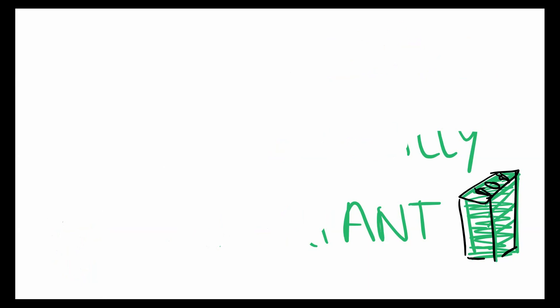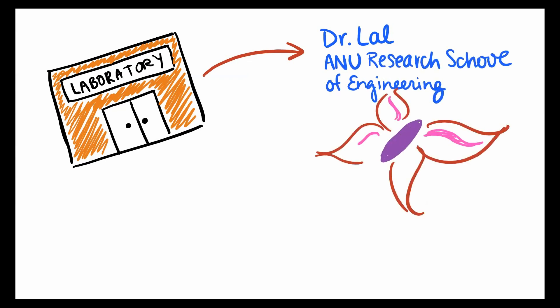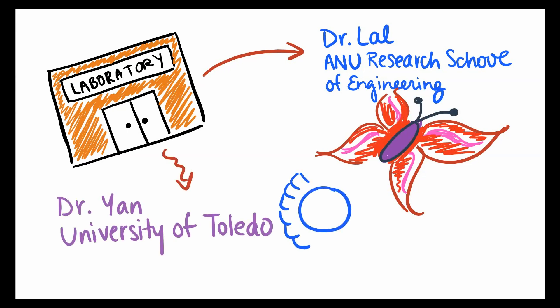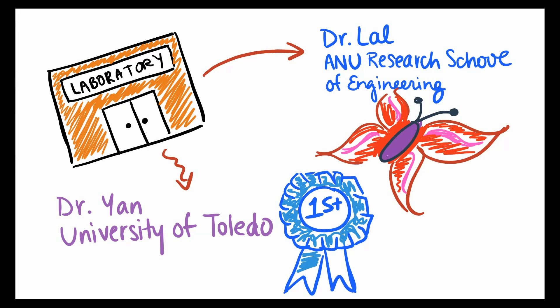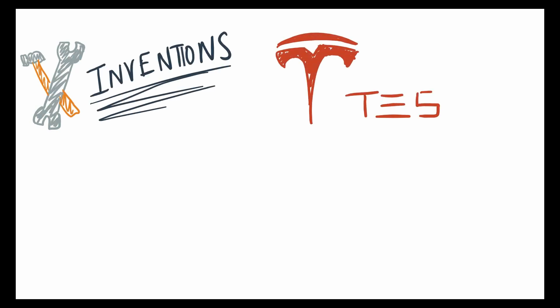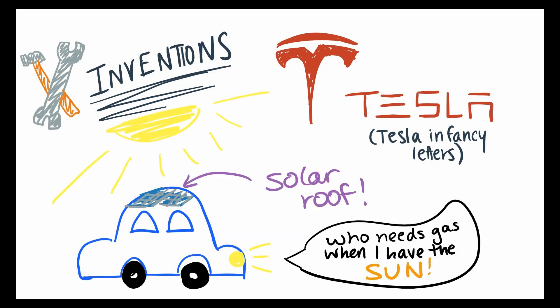As Dr. Davies mentioned, there is so much research being done to improve solar panels' efficiencies and costs. One example is Dr. Lal at the ANU Research School of Engineering — his group is using designs and structures inspired by butterfly wings to make solar panels more efficient. In addition, recently the world record for solar cell efficiency was actually broken by a team at the University of Toledo, led by Dr. Yan. Not to mention all of the cool inventions involving solar panels being researched, like companies such as Tesla researching solar roofs for cars, which means that cars might be completely self-powered by sunlight alone.